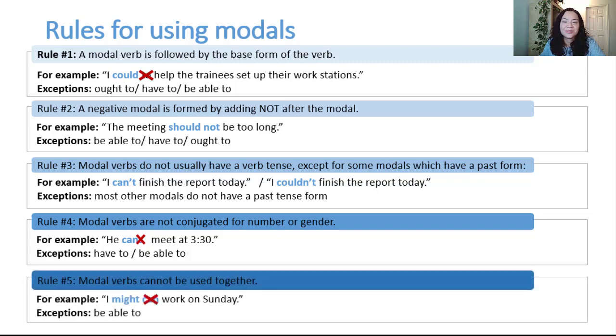Rule number five: modal verbs cannot be used together. For example, I might can work on Sunday. Exceptions: be able to. With this modal, we will often combine it with others. For example, I might be able to work on Sunday.